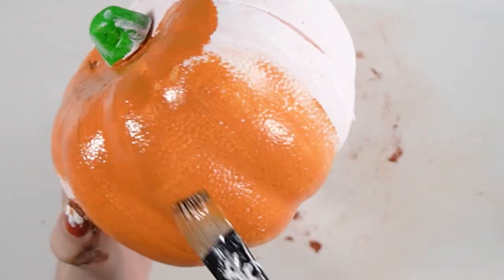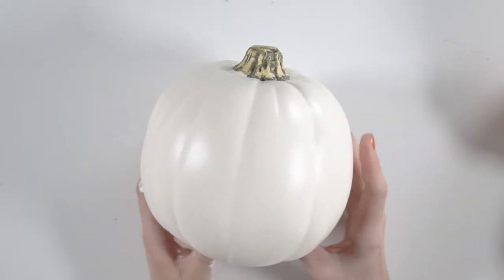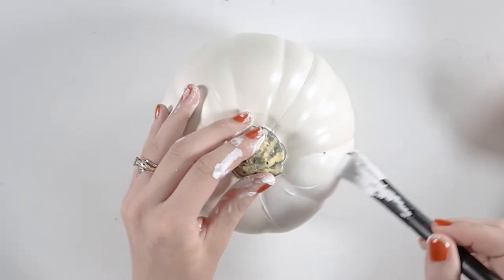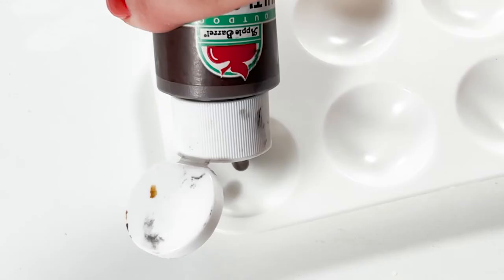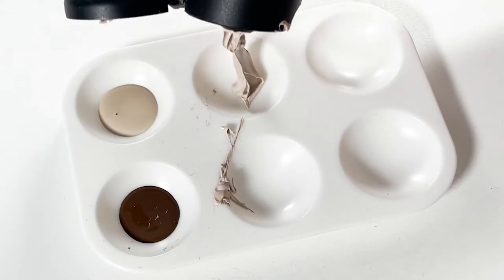And then once all of the less expensive pumpkins were painted, I brought in the more expensive pumpkins and began painting those. I started off by gessoing each one of them. Okay, yep, gesso is done. And I wanted to keep these white so that they would pop off the more colorful cheap pumpkins, but just make them look more realistic.